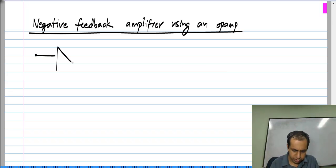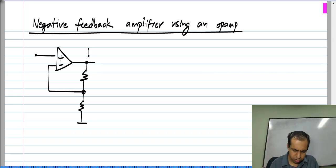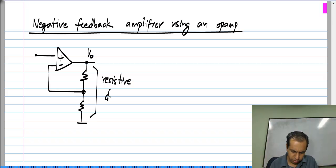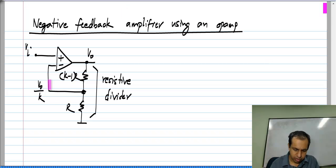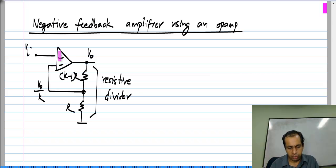The circuit we derived has a resistive divider with resistors (k minus 1)R and R to get V naught by k, and we compare that to the input. That is, we take the difference between V_i and V_naught/k, and that difference is supplied to the input of the op amp. So, the output is strongly driven by the difference between V_i and V_naught/k.